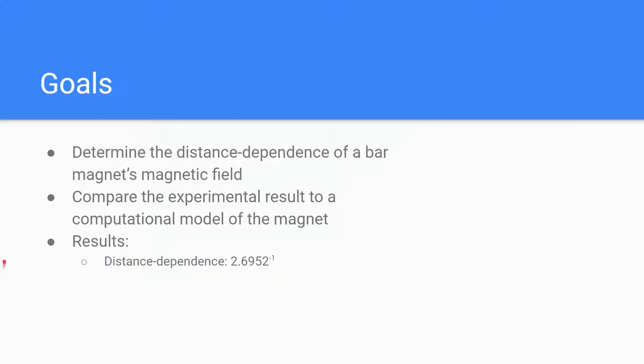So I'll start with the lab goals. The goal of the experimental portion of the lab was to determine the distance dependence of a bar magnet's magnetic field by measuring the magnetic field at various locations. And then we wanted to compare the experimental results of magnetic field at those locations to a computational model of the same magnet and its field. And as a preview of the results, here is the distance dependence found via the experimental measurements.